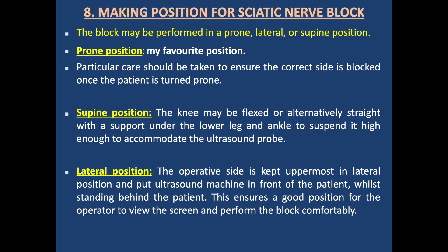Making position for the sciatic nerve block: The block may be performed in prone, lateral, or supine position. Prone position is the preferred position because the probe hand and needle hand are well stabilized and the patient is stable and not moving the leg. Particular care should be taken to ensure the correct side is blocked once the patient is prone. Supine position can be managed with the knee flexed or alternatively straight, with a support under the lower leg and ankle to suspend it high enough to accommodate the ultrasound probe. Lateral position is also practiced, with the operator side uppermost and the ultrasound machine in front of the patient while standing behind.